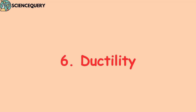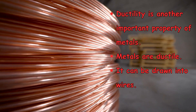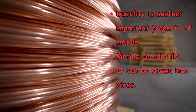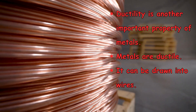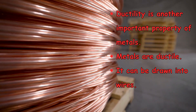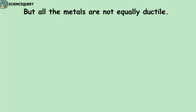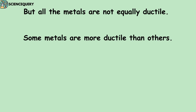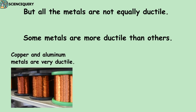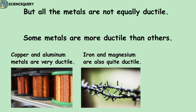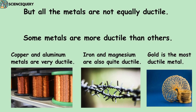The next property is ductility — another important property of metal. Metals are ductile, meaning they can be drawn into wires. However, not all metals are equally ductile. For example, copper and aluminum are more ductile, while iron and magnesium are quite ductile. But gold is the most ductile metal.